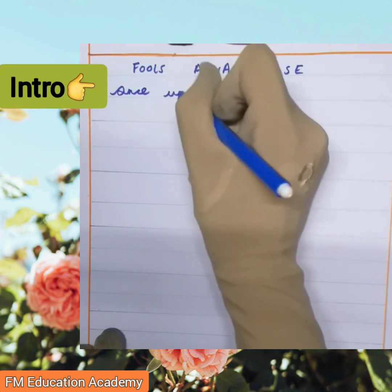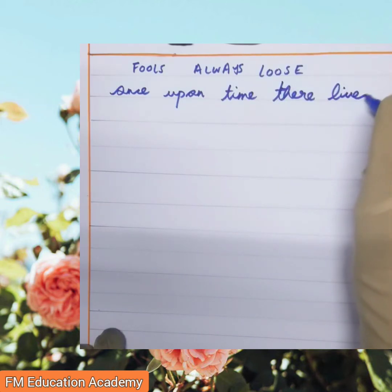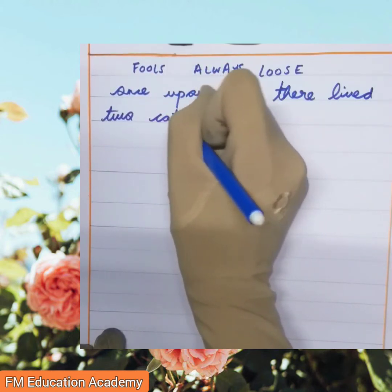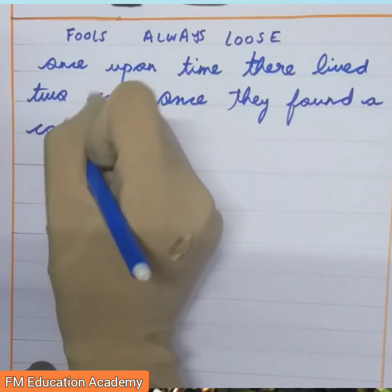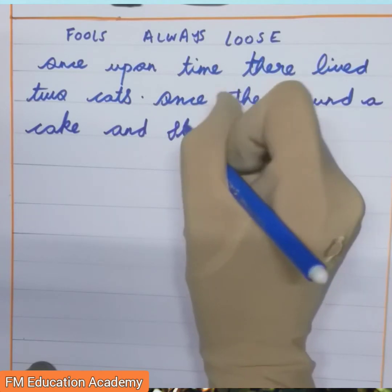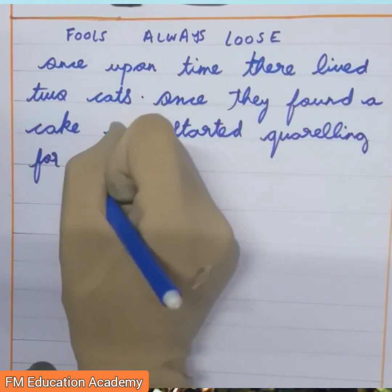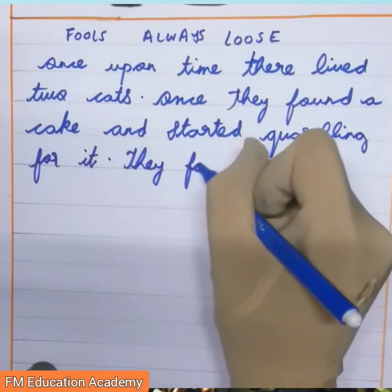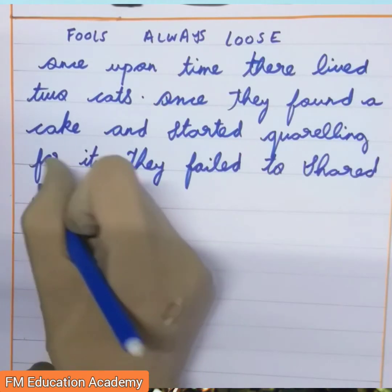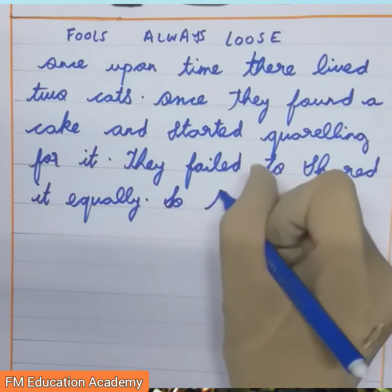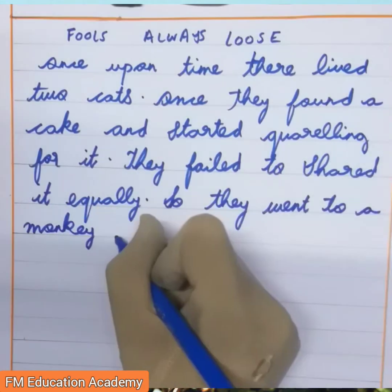Now how will I start my introduction? I'll start in the past tense: 'Once upon a time, there lived two cats. Once they found a cake and started quarreling for it. They failed to share it equally, so they went to a monkey to get the matter settled.'